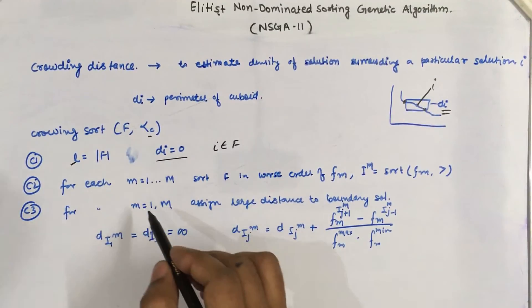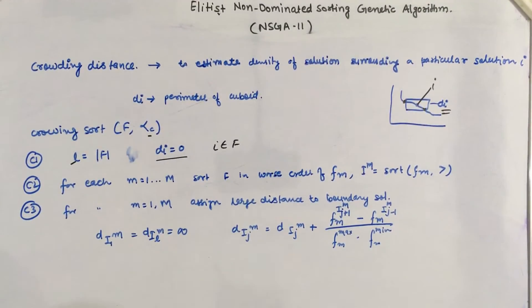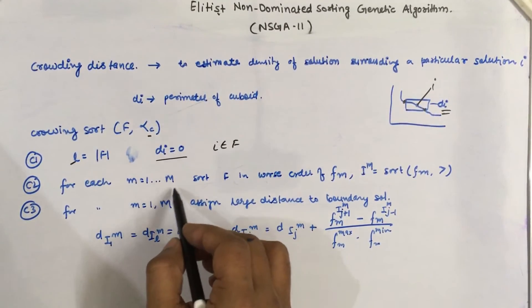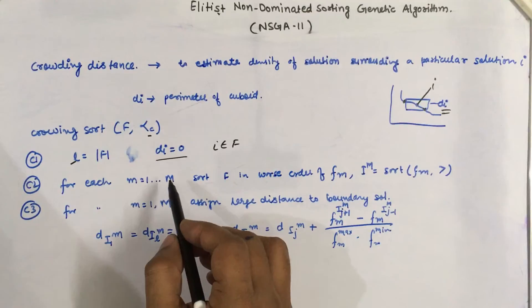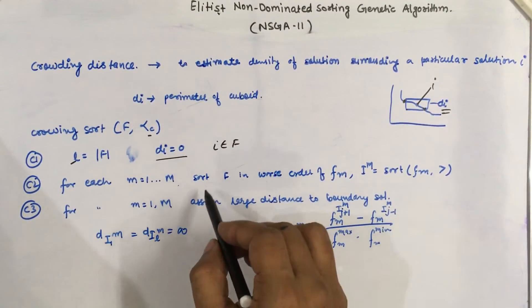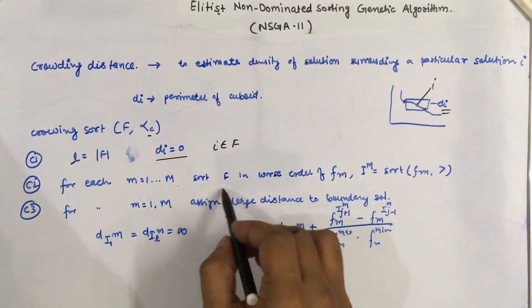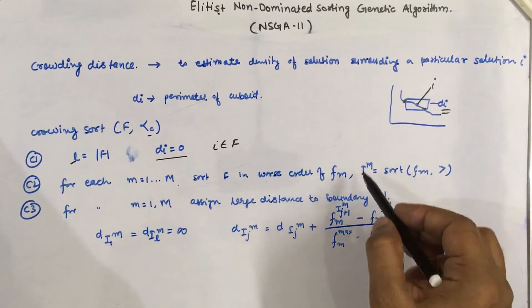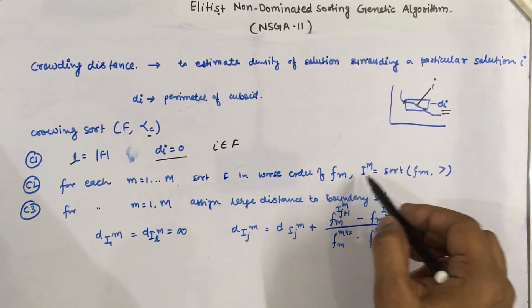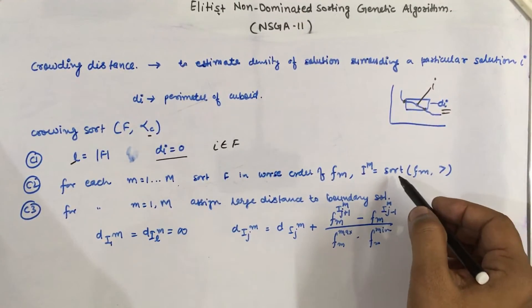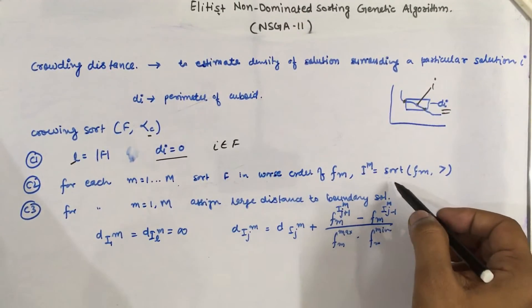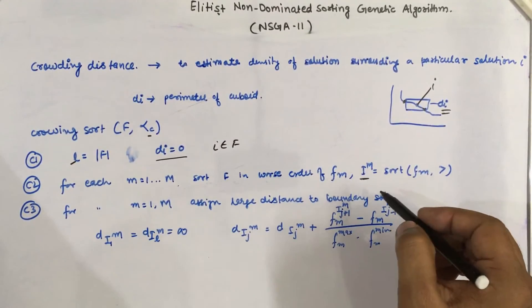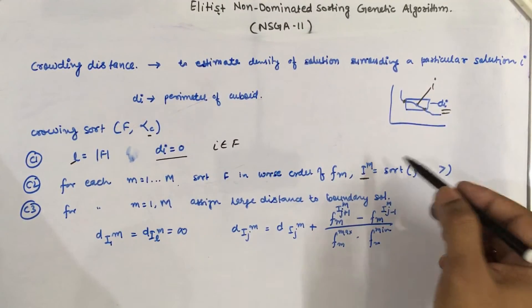Because it is a multi-objective scenario, for each m from 1 to capital M (total number of objectives), we sort the solutions in front F in descending (worst) order of fitness values for each objective from 1 to M. The resulting indices after sorting are stored in index set I_m.